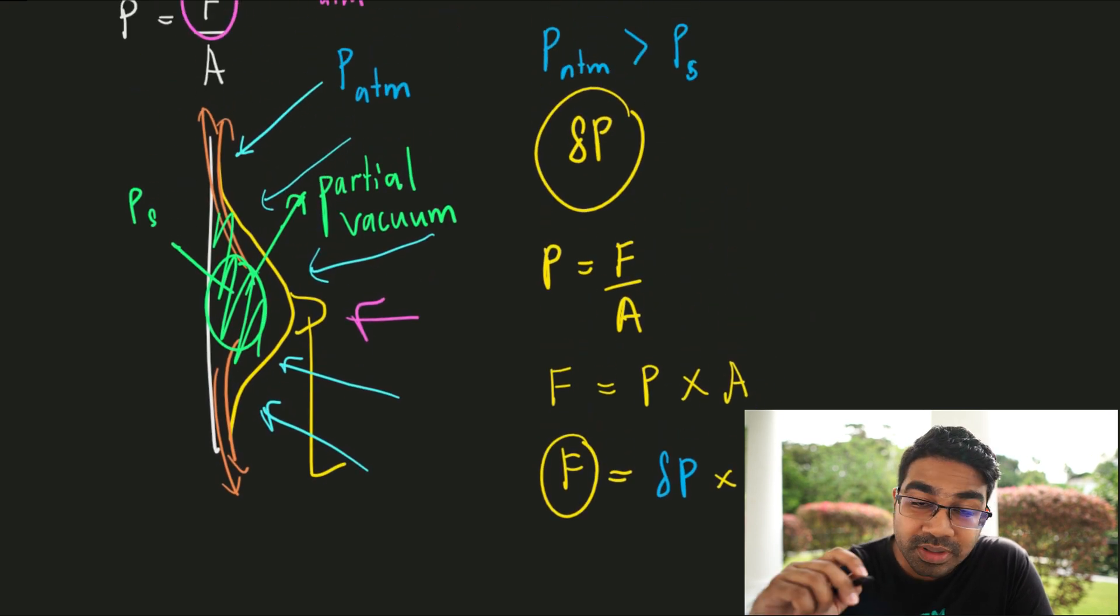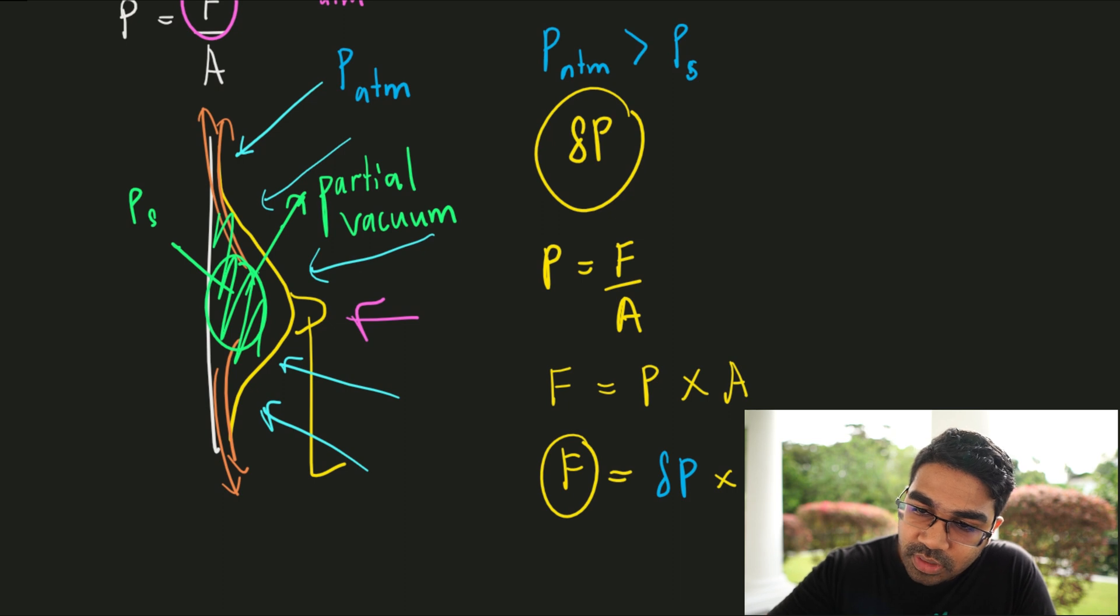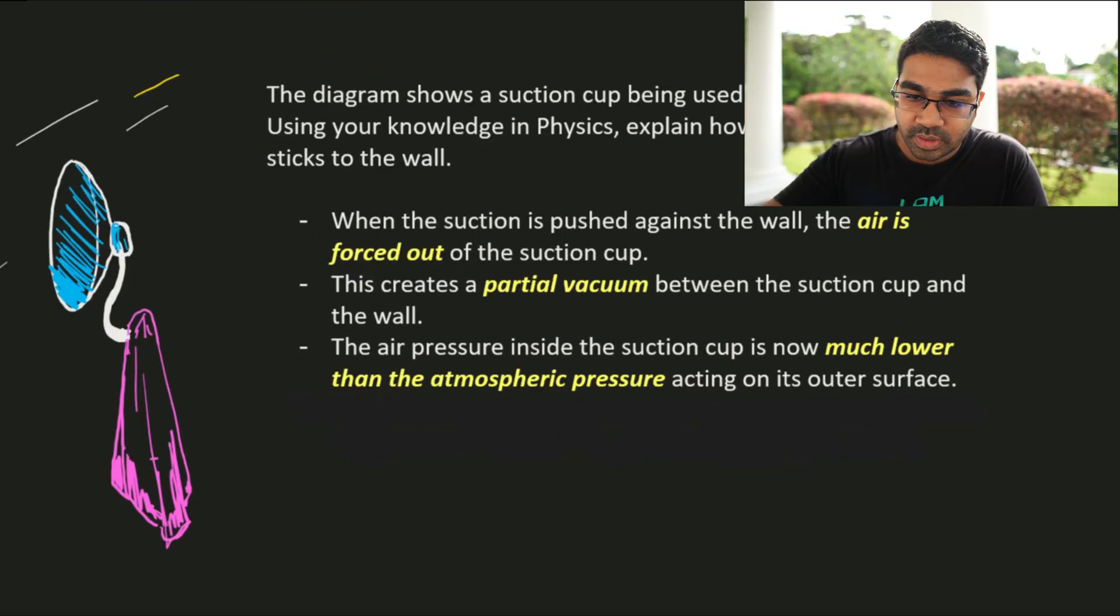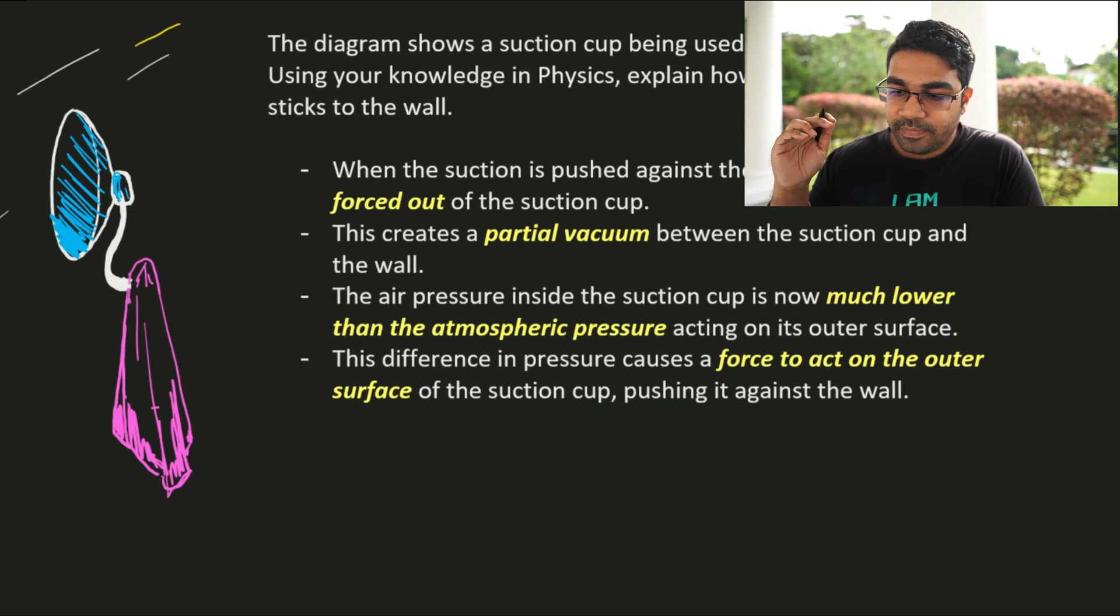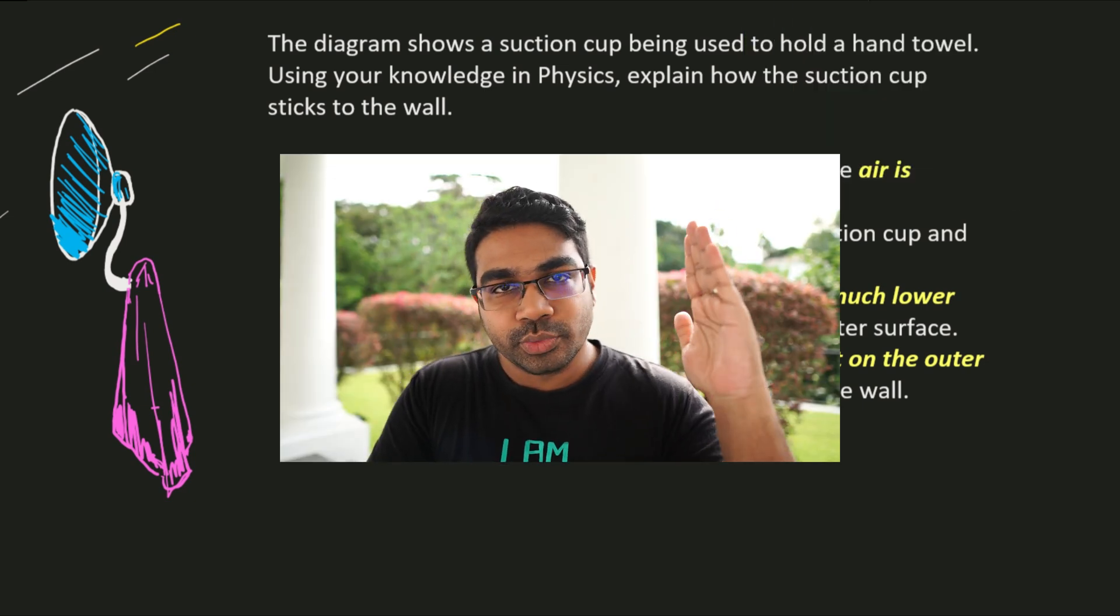So this force, because the atmospheric pressure is higher, the direction of force will be from the region of higher pressure to the region of lower pressure. So there is going to be a force that is pressing down on the suction cup and keeping it pressed to the wall. Because of the difference in pressure, there is a force that acts on the outer surface of the suction cup that pushes it against the wall. And this is the only thing that keeps the suction cup in place, stuck to the wall.